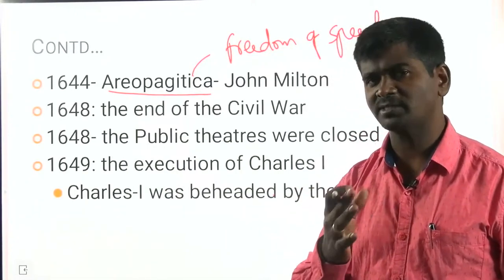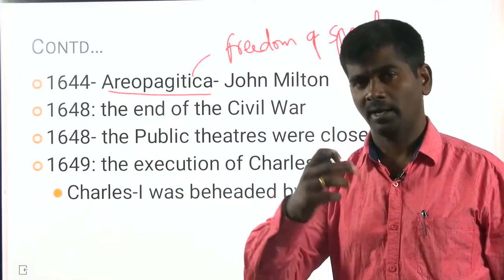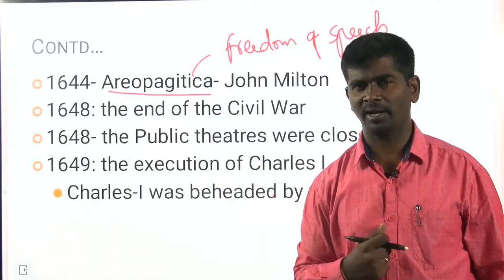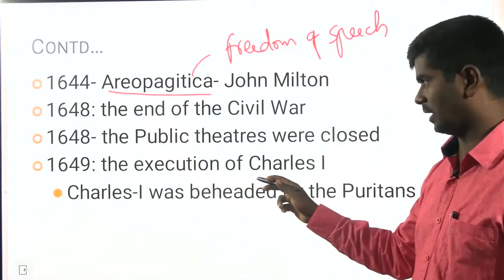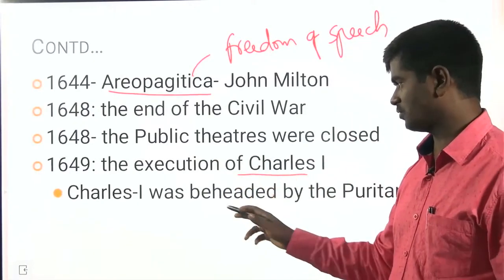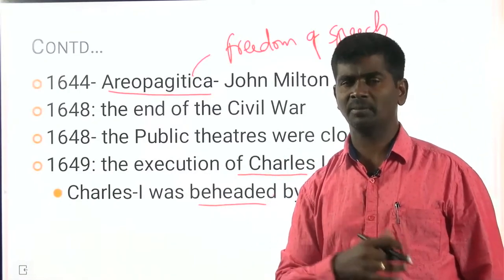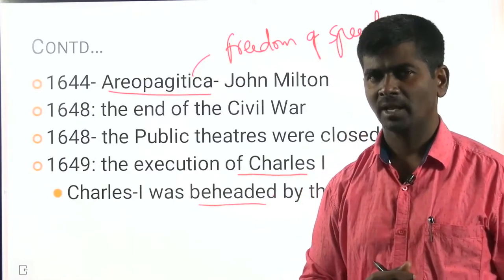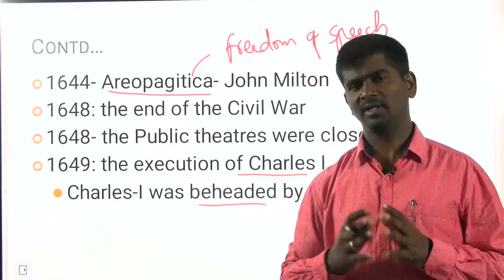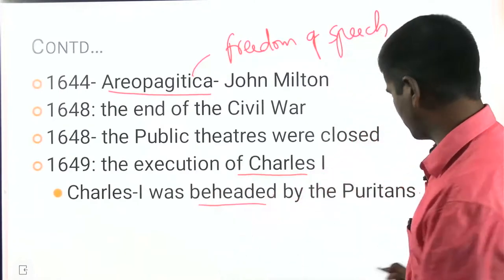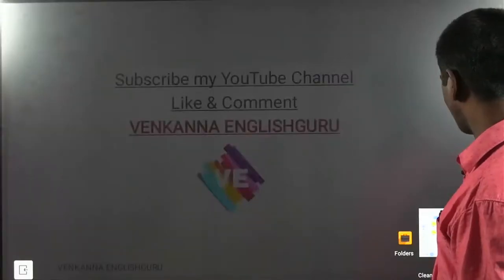In 1649, the Puritans and Protestants were uncontrollable. They were not able to accept the problems created by Charles I. Their patience broke and they killed the Catholic King Charles I. The execution of Charles I — he was beheaded under the leadership of Oliver Cromwell. By that, the Caroline age is over.